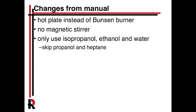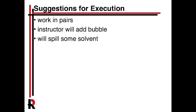Compared to the lab manual, it's fairly identical. We're going to be using a hot plate instead of a Bunsen burner. Some of these things are flammable, so I'd rather use a hot plate. We don't have a magnetic stirrer, so you're going to have to stir it. We're going to get rid of a couple of liquids and only do three: isopropanol, ethanol, and water.